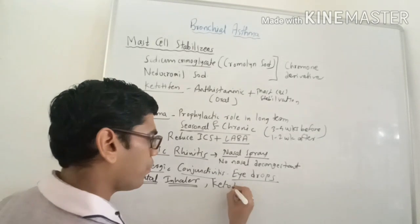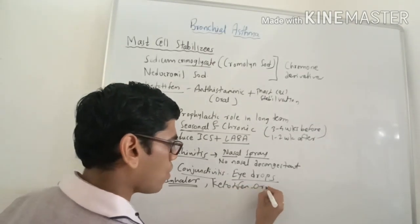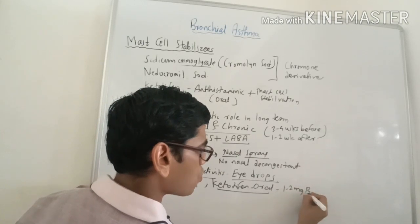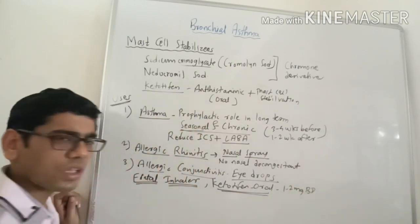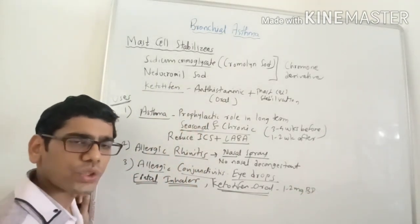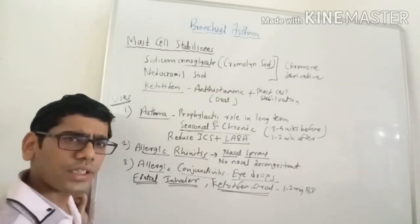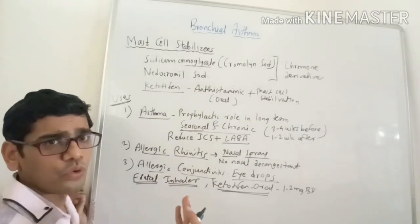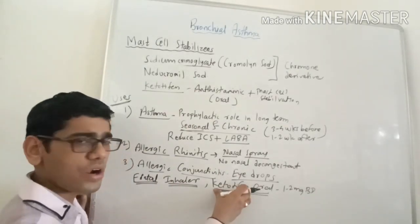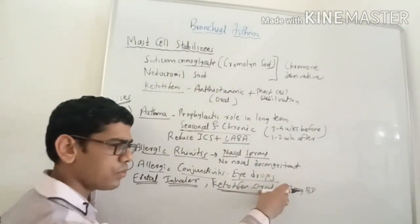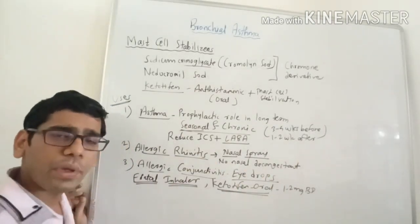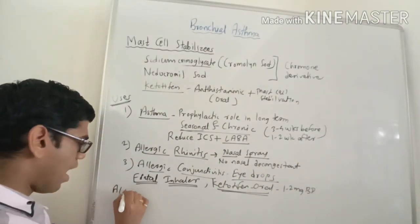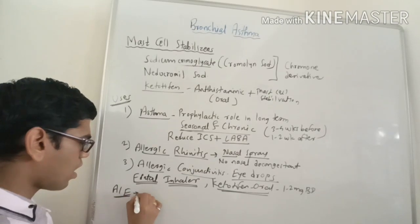Ketotifen can be given by oral route — one to two milligrams BD is the usual dose. It is also preferred in patients having multiple allergic disorders like perennial allergic rhinitis, allergic conjunctivitis, urticaria, or food allergy. So ketotifen is the only drug in this category which can be given by oral route in patients with multiple allergy disorders.